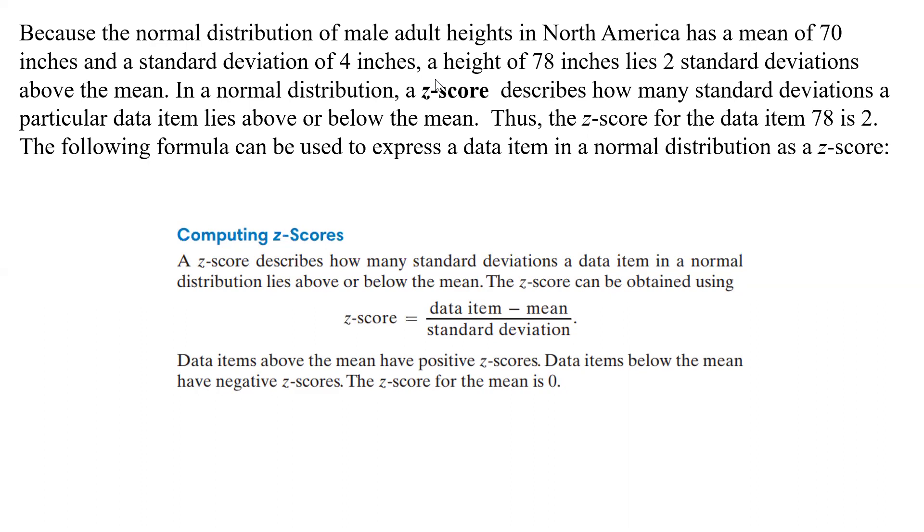Z-scores can be either positive or negative depending on if they're below or above the mean. The z-score for the data item 78 is 2 above the mean of 70, so it has a z-score of 2. So how do we compute it?